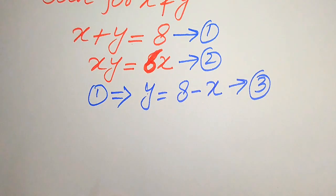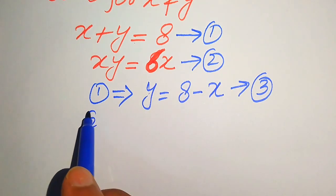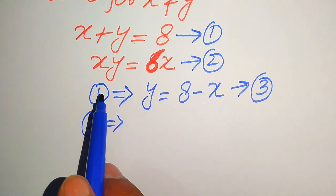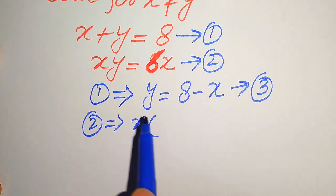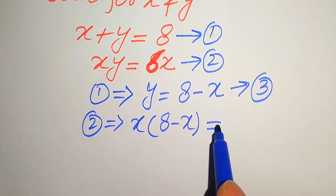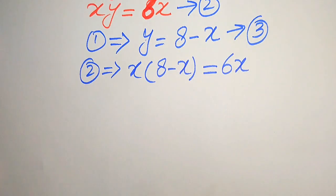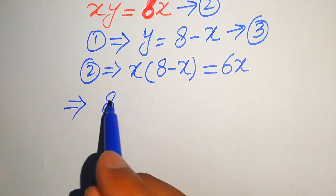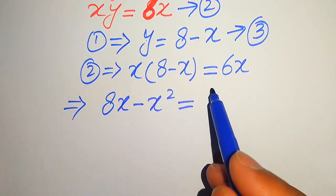Now we put the value of y from equation 3 into equation number 2. Equation number 2 is xy equals 6x, and substituting y we write x times of (8 minus x) equals 6x. Multiplying x through, this becomes 8x minus x squared equals 6x.